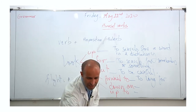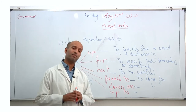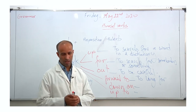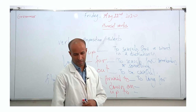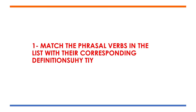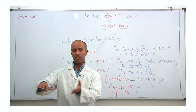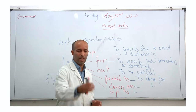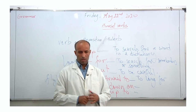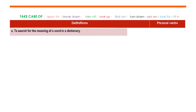Now let's move on to the next step — we're going to see exercises to learn more phrasal verbs and practice the ones from the email. You need to match the verbs in the list with their corresponding definitions. Definition A: to search for the meaning of a word in the dictionary. We have already seen this — the answer is 'to look up.'